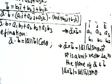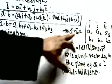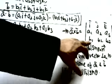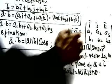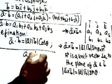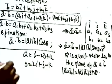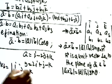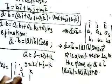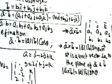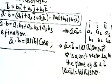Cross product is found using a determinant. For a×b, the first row is i, j, k; the second row is the coefficients of a; and the third row is the coefficients of b. For example, if a = i − 2j + k and b = 2i + j − k, then a×b has first row i j k, second row 1 −2 1, third row 2 1 −1, and we expand the determinant.